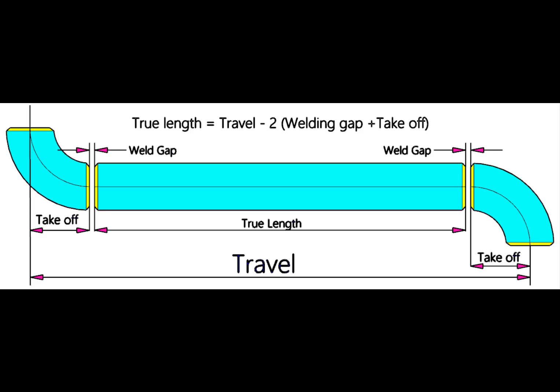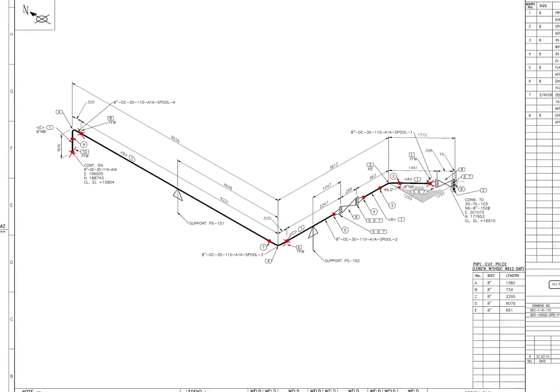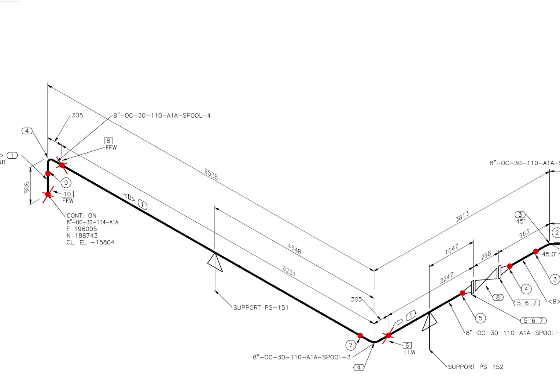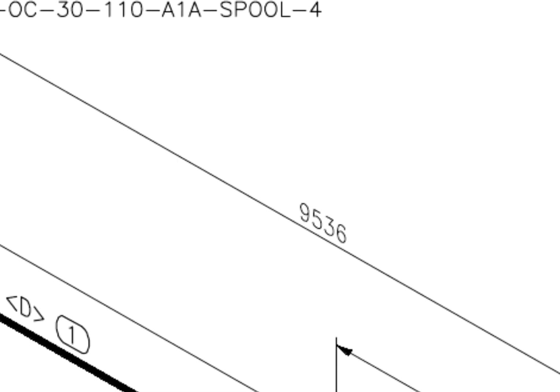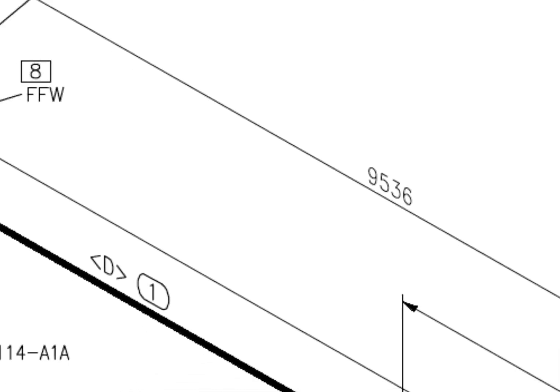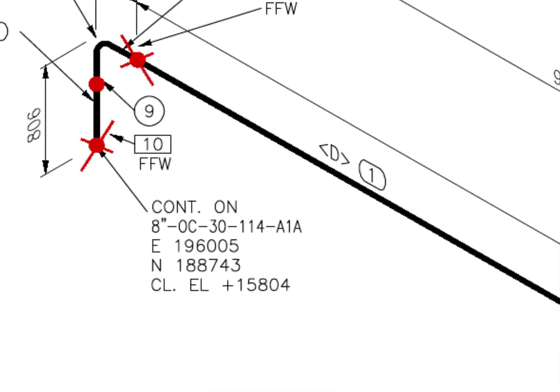Let us go to some examples. Here the travel length is 9536. Let us check the diameter of the pipe. What is the item number? Item number is 1.